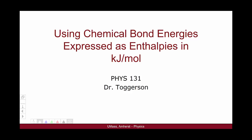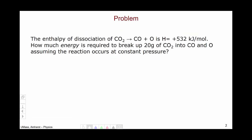Hello. In this video, we will be doing an example problem wherein we explore chemical potential energy in chemical bonds, which is expressed in terms of enthalpy in kilojoules per mole. So the enthalpy of dissociation of carbon dioxide into carbon monoxide and oxygen is 532 kilojoules per mole. This is a number very similar to something you might see in a chemistry text or a table of constants for chemicals.